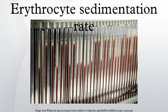Normal values of ESR have been quoted as 1–2 mm per hour at birth, rising to 4 mm per hour eight days after delivery, and then to 17 mm per hour by day 14. Typical normal ranges quoted are: newborn 0–2 mm per hour; neonatal to puberty 3–13 mm per hour, though other laboratories place an upper limit of 20.